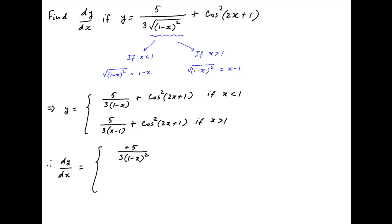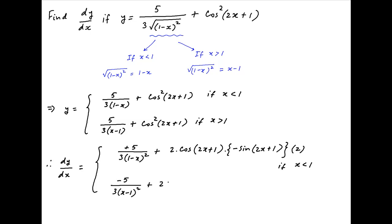In the first case (x < 1), dy/dx equals −5/3·(1-x)²·(−1) + 2·cos(2x+1)·(−sin(2x+1))·2. In the second case (x > 1), dy/dx equals −5/3·(x-1)² + 2·cos(2x+1)·(−sin(2x+1))·2.